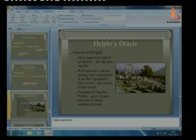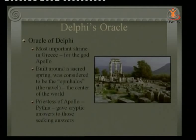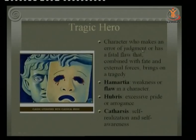The Delphi oracle is the shrine of God Apollo where oracles are given. Whoever — king, queen, or any person — has doubts about their prophecy or suffers from pestilence, they come to this shrine and ask for prophecy and guidance. The Greek god would give them guidance. The oracle was built around a sacred spring and was considered the Omphalos — the center of the world. The priestess of Apollo, the Pythia, gave cryptic answers to those seeking them.